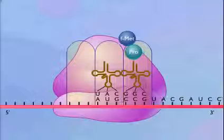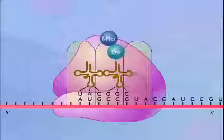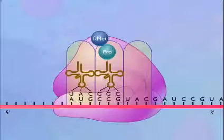The ribosome now advances a distance of one codon, and the transfer RNA that carried the formyl methionine is released at the E-site.